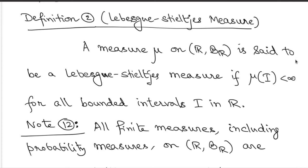The class of measures we consider is called the Lévy-Stieltjes measures. We take measures on the measurable space of the real line together with the Borel sigma field. A measure is called Lévy-Stieltjes if it associates finite mass to all bounded intervals. So for any interval (a, b] — open, closed, or mixed endpoints — as long as a and b are real numbers, the measure of that interval must be finite.